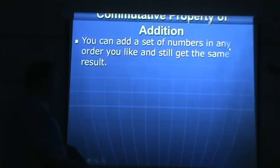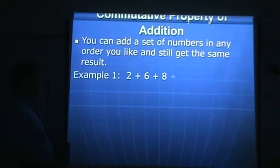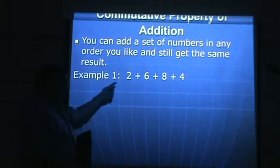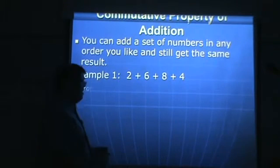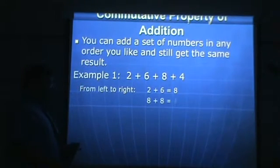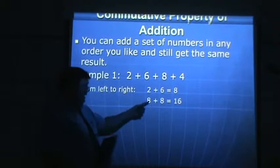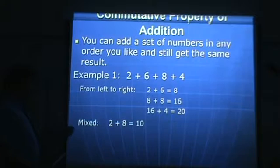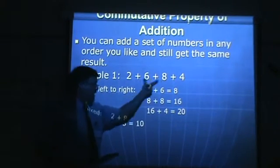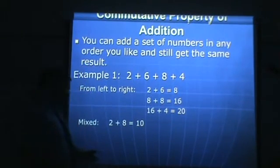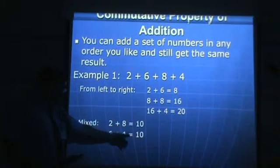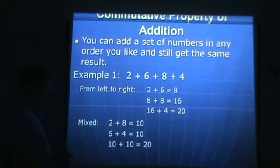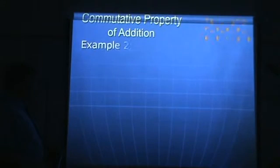Looking at the commutative property of addition — you can add a set of numbers in any order and still get the same result. For example, if I have 2 plus 6 plus 8 plus 4, I could add those from left to right: 2 plus 6 is 8, plus 8 gives me 16, plus 4 gives me 20. Or I could mix it up and do the 2 and the 8 together and the 6 and the 4 together — both of those give me 10 — then add the two 10s to get 20.